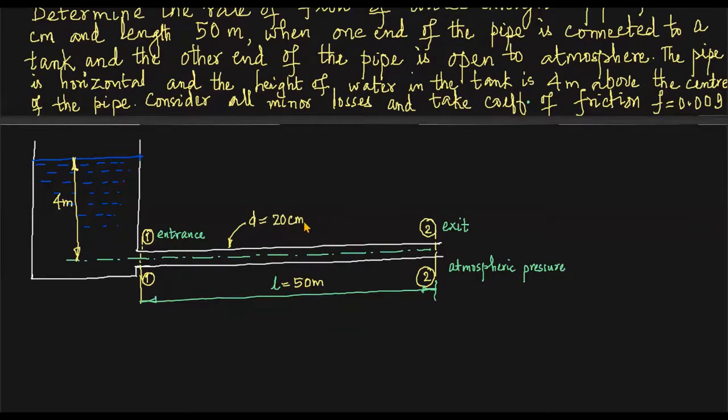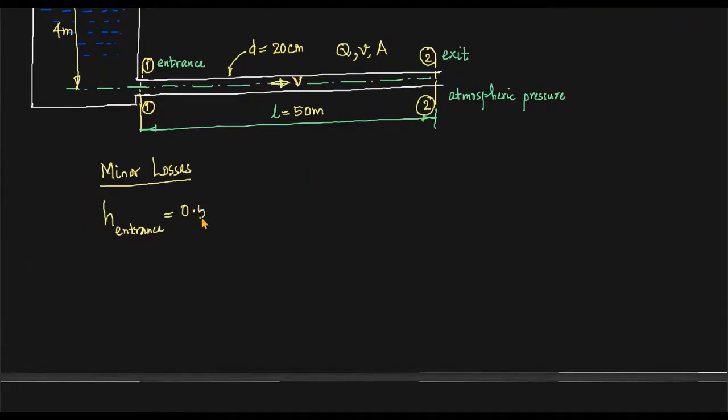You can convert that into meters point two. Loss coefficient at entrance is generally point five, so it is V square over 2G. The entire kinetic head is lost when the pipe is exposed to the atmosphere like this.